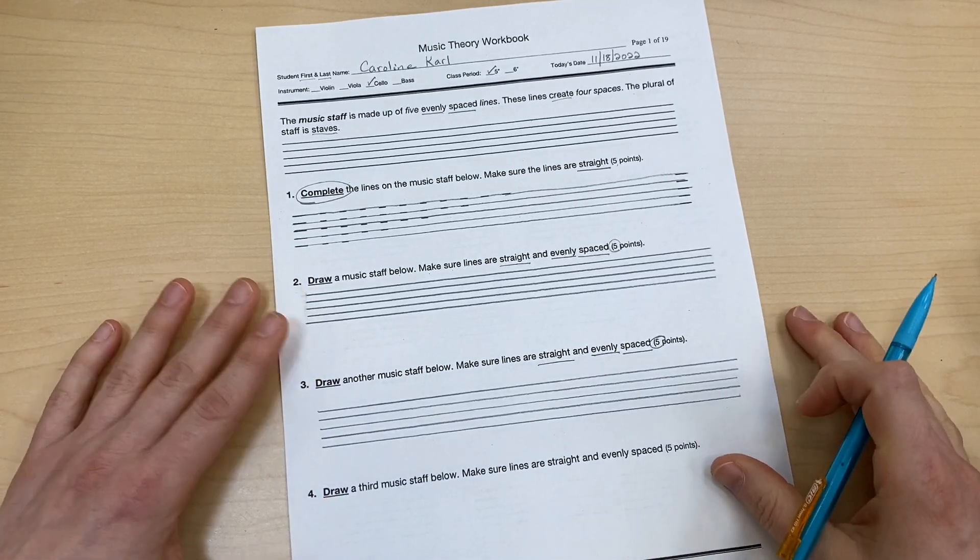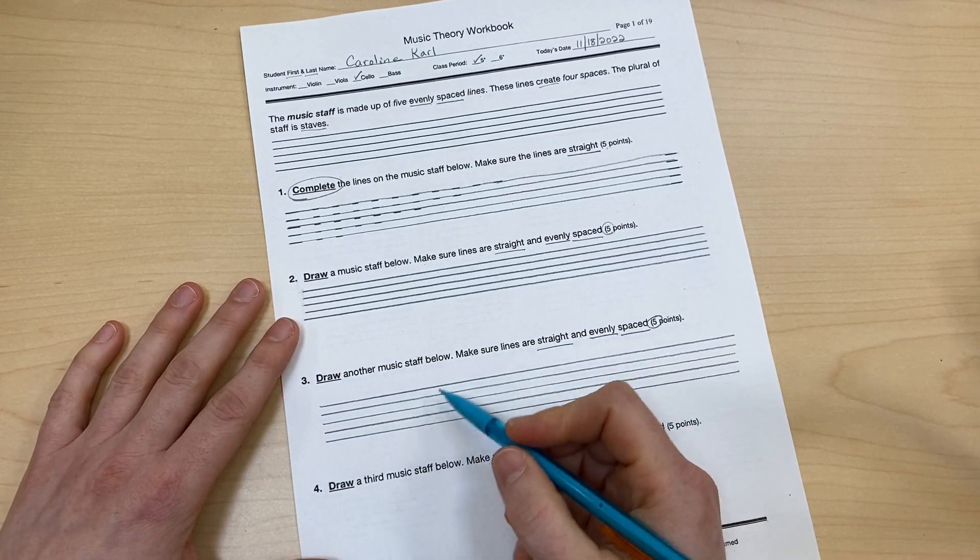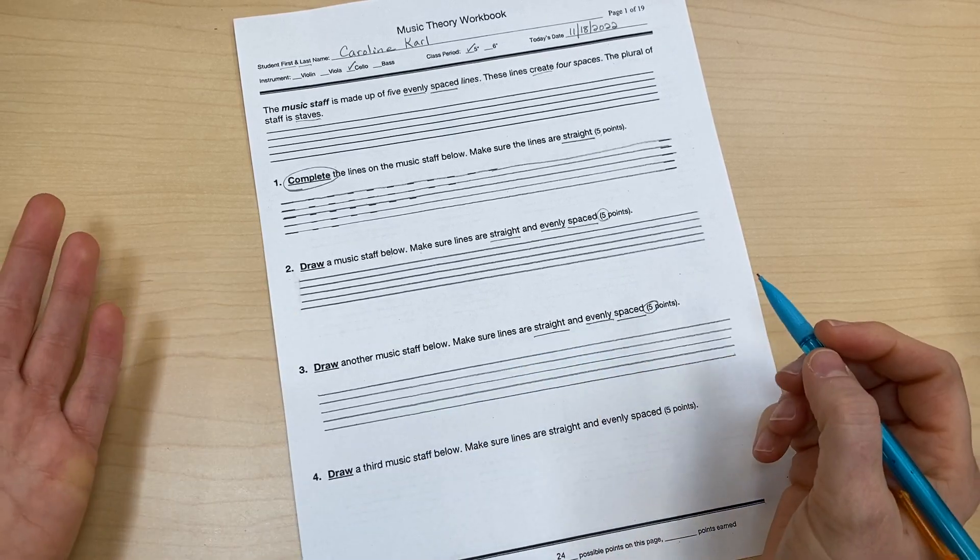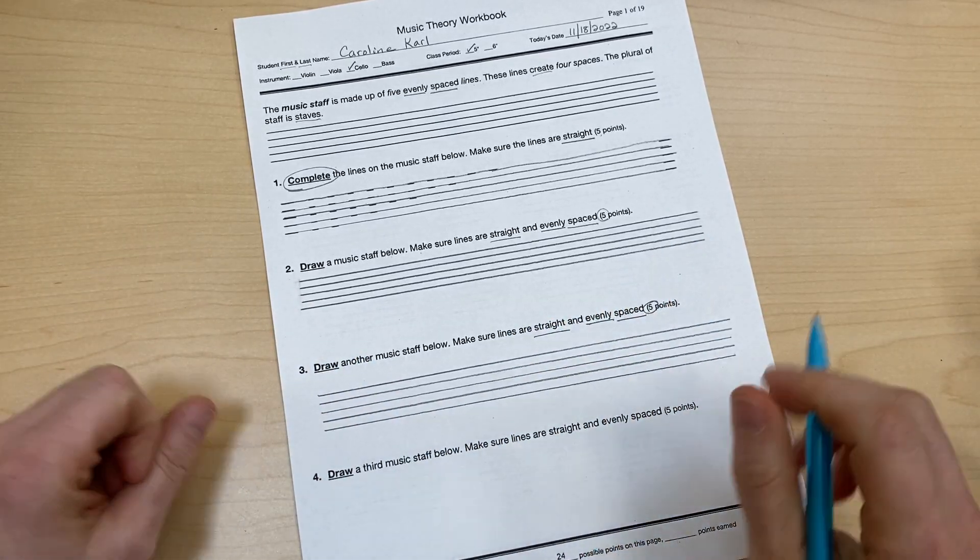Now, the reason why we have to be so careful is because when we put notes on here, if our lines are not straight, we won't be able to tell what the note is supposed to be.